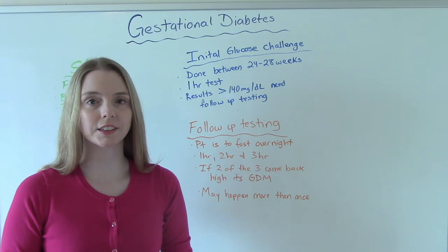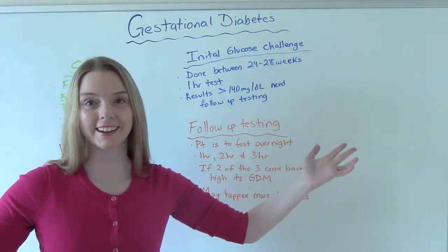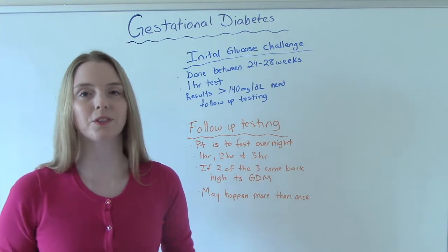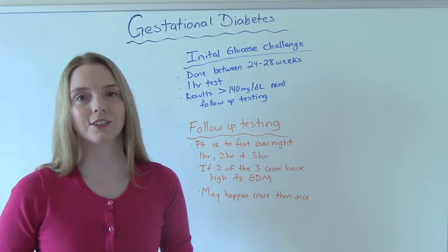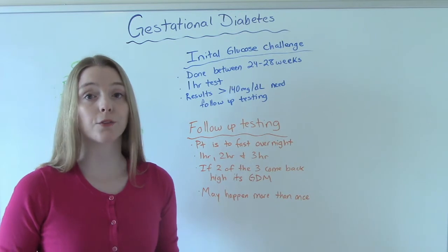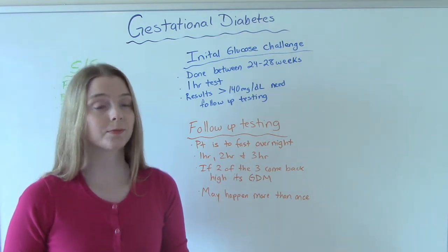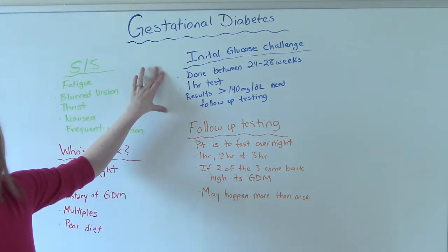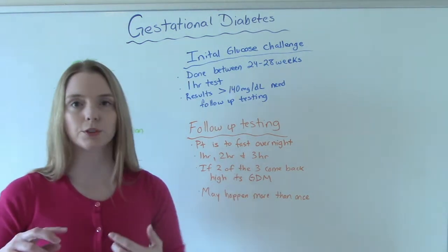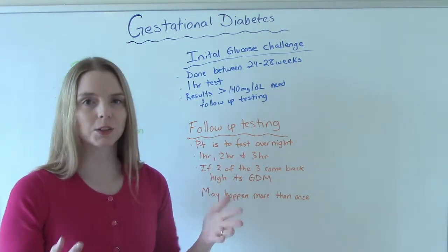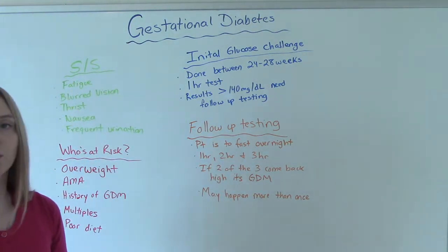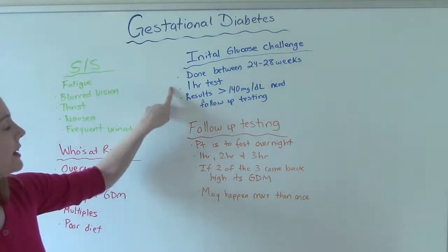Who gets screened for gestational diabetes? Everybody. Not just those at-risk people — every pregnant woman will get screened for gestational diabetes during her pregnancy, usually between 24 and 28 weeks. The initial glucose challenge, sometimes called the glucose tolerance test or the one-hour test, is done between 24 and 28 weeks and it takes an hour.